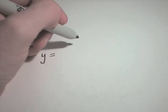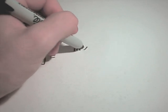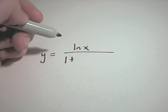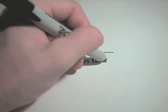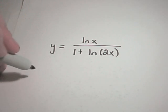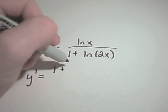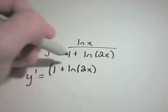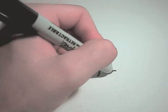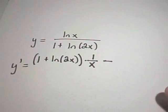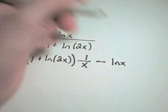Let's do one more logarithm problem. Suppose I have y equals ln of x over 1 plus ln of 2x. On this one, I'm just going to have to use the good old quotient rule. It says you get the bottom times the derivative of the top, the derivative of ln of x being 1 over x. And you put a minus sign in between.